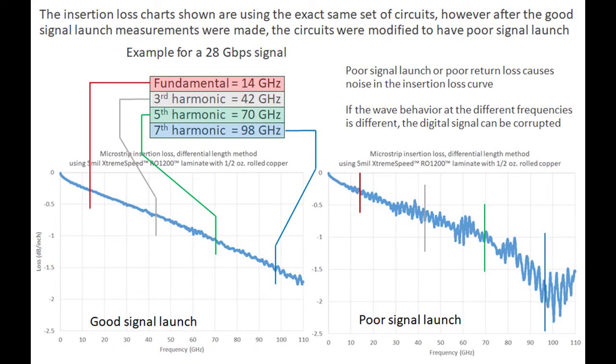Shown here are two insertion loss curves, and it's actually the same circuit. This particular circuit was actually tested by differential length. And the differential length is basically a test in a circuit. They're exactly the same in design, except one circuit is short, one circuit is long. And from the difference, you can extract the dielectric constant and the insertion loss on the y-axis. Now, what's interesting here is this is the same set of circuits being tested. On the left, I have good signal launch, or basically the transition for the connector to the circuit is very well optimized. And you can see a nice, smooth insertion loss curve going from 10 megahertz all the way up to 110 GHz. Now, the chart to the right is, again, the exact same circuits, except I modified the signal launch area to have poor return loss. And now you can see that the insertion loss curve is not smooth. There's a lot of noise in there.